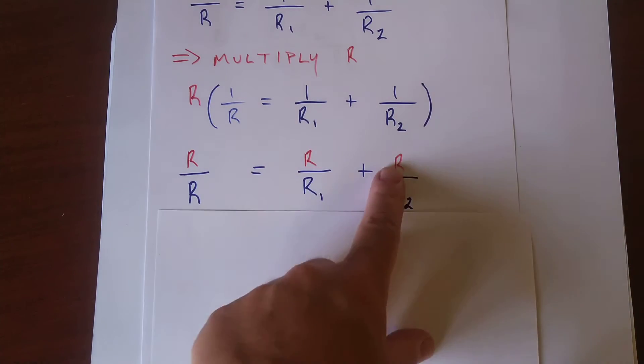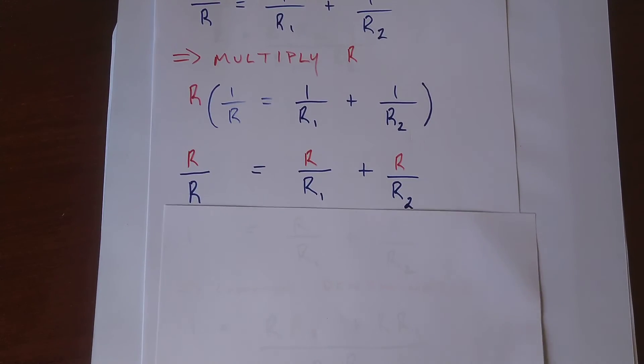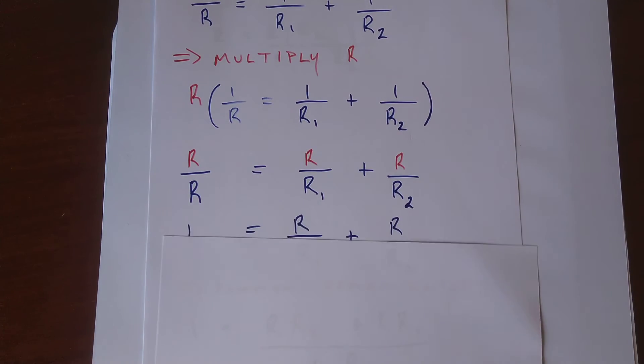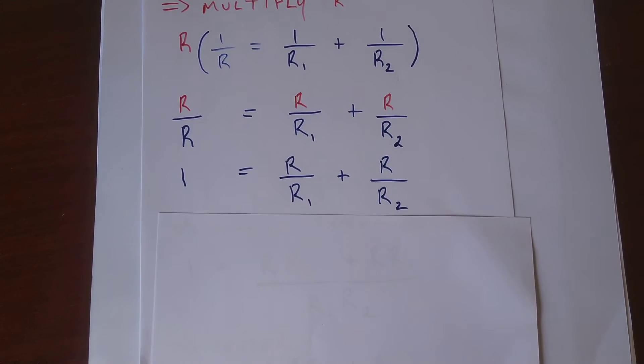And now we have R over R, R over R₁, R over R₂, and this is going to cancel. So we're going to be left with 1. I try to take this step by step, because this one is confusing.